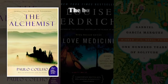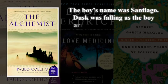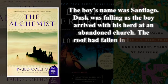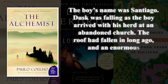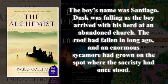The boy's name was Santiago. Dusk was falling as the boy arrived with his herd at an abandoned church. The roof had fallen in long ago, and an enormous sycamore had grown on the spot where the sacristy had once stood.